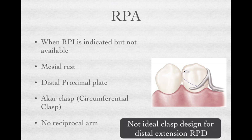However, with the RPA system, there is no reciprocal arm necessary to prevent tooth torquing. So this is not an ideal clasp design for distal extension RPDs.